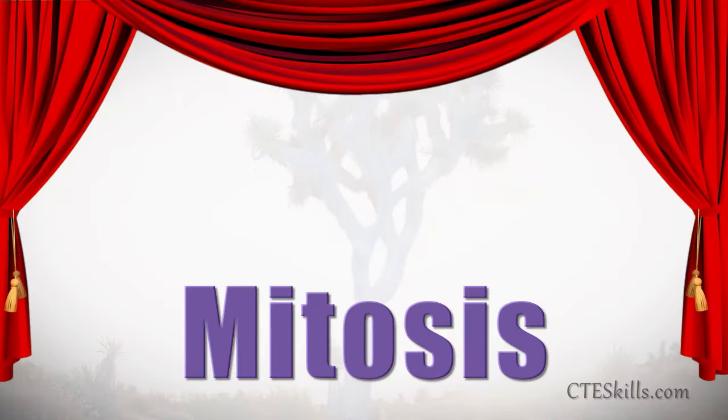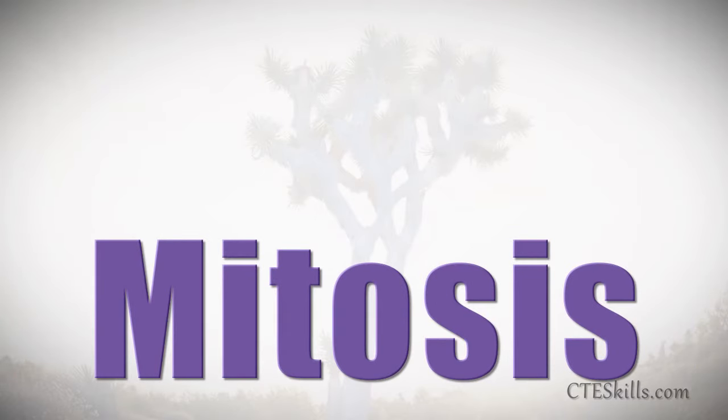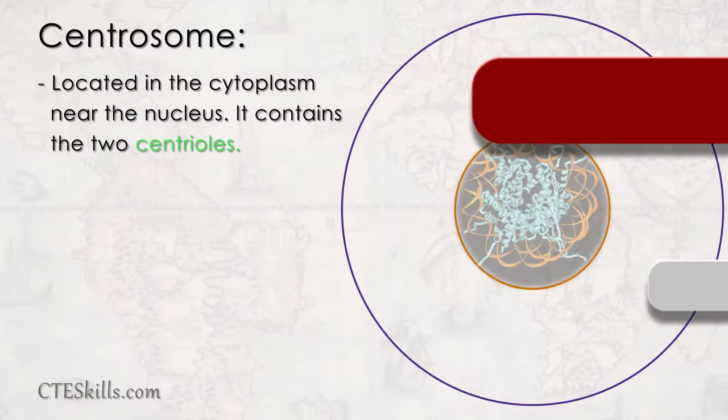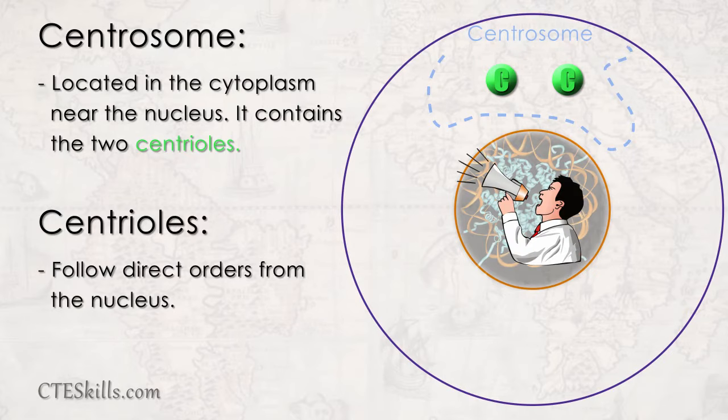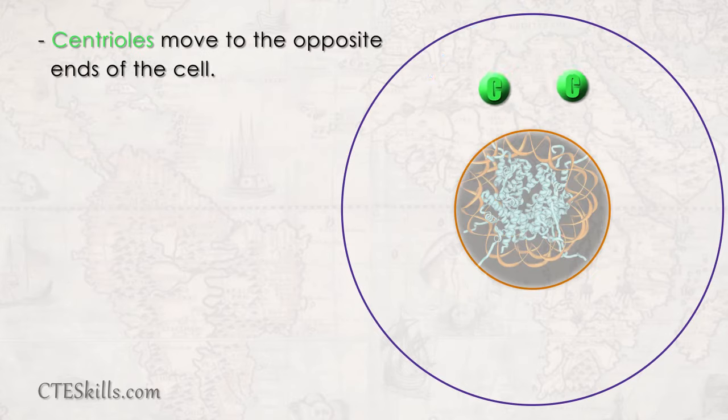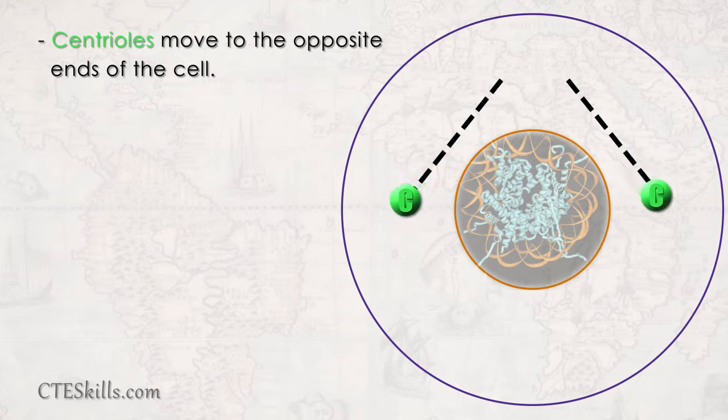Now that we're ready, we'll begin with the actual cell division process called mitosis. The centrioles, which are found in a specific area of the cell called the centrosome, follow direct orders from the nucleus. The centrioles move out of the centrosome and begin a road trip to the opposite ends of the cell.